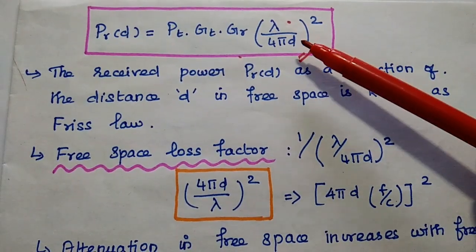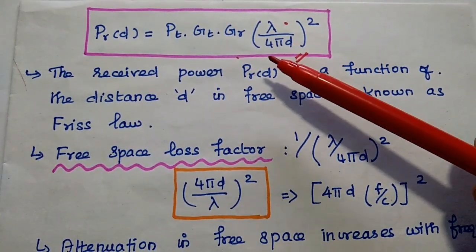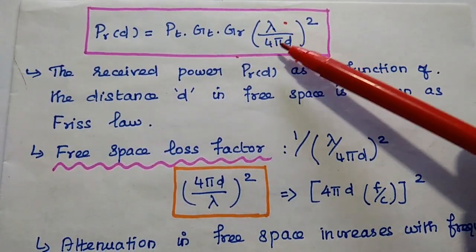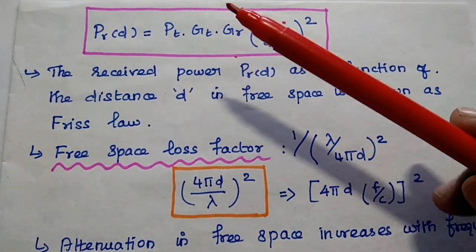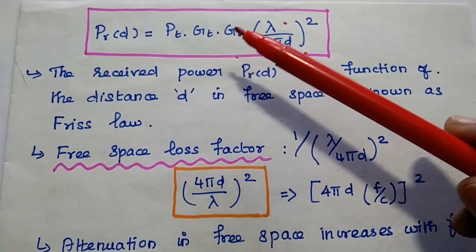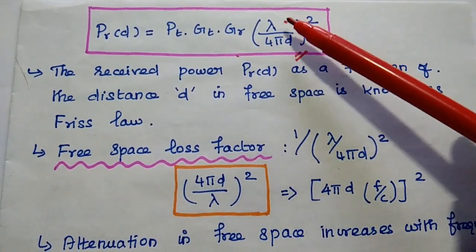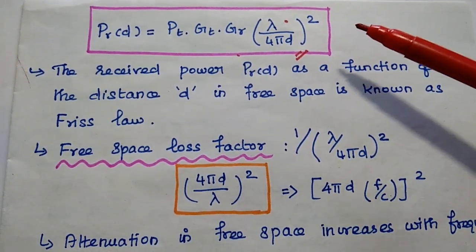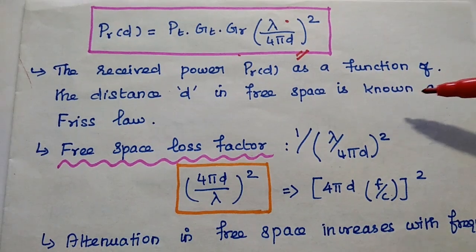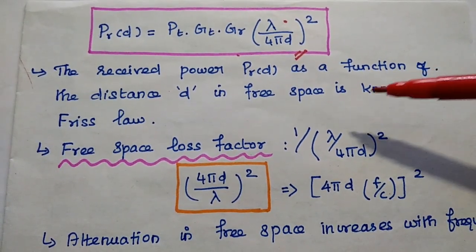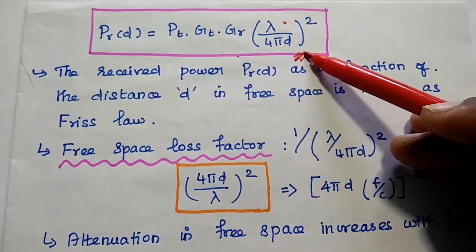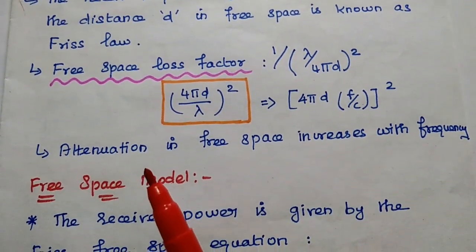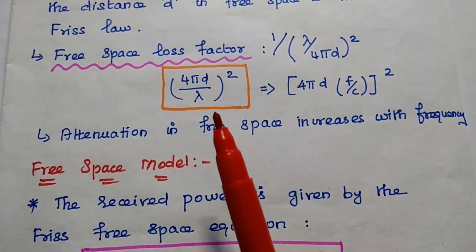Then the received power as a function of distance D in free space is given as Pr(D) = Pt · Gt · Gr · (λ / 4πD)². Here, Pt is the transmitted power, Gt is the transmitting antenna gain, Gr is the receiving antenna gain, λ is the wavelength, and D is the distance between transmitter and receiver. This equation is also known as the Friis power equation or Friis law. The reciprocal of the factor (λ / 4πD)² is the free space loss factor.